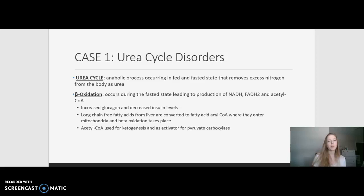Before we dive into the first case that talks about urea cycle disorders, let's briefly review the urea cycle and beta-oxidation. The urea cycle is an anabolic process that occurs during both the fed and the fasted state. This process utilizes multiple different enzymes and it removes excess nitrogen from the body and excretes it as urea. Deficiencies in this cycle can lead to elevated ammonia levels, as we learned about in the course.